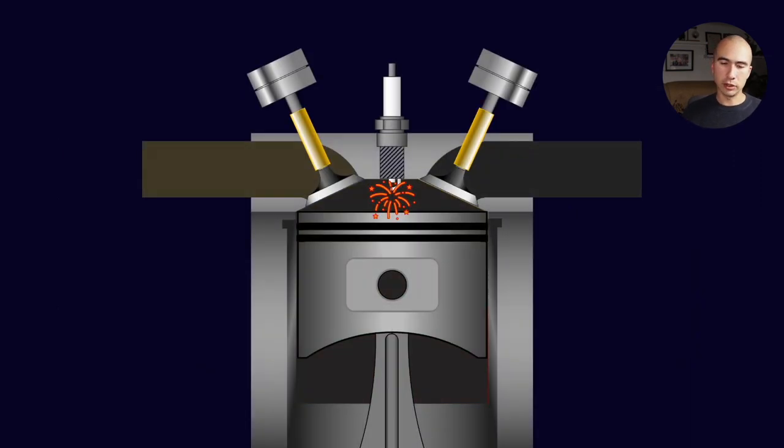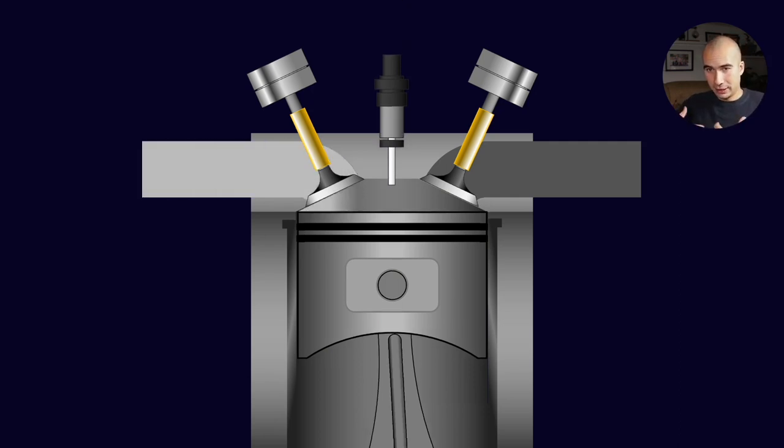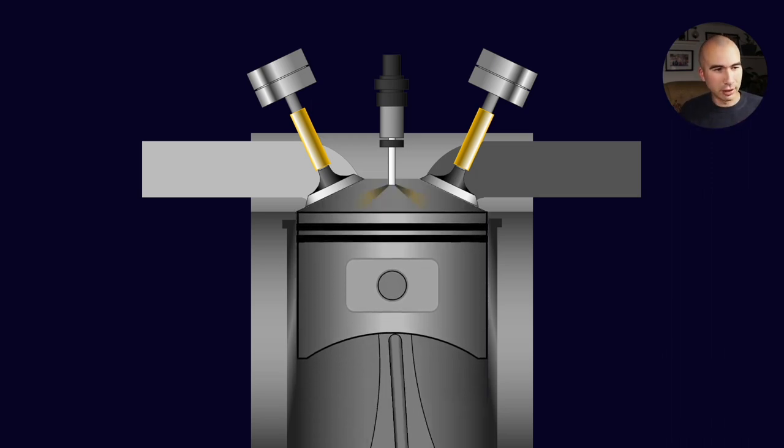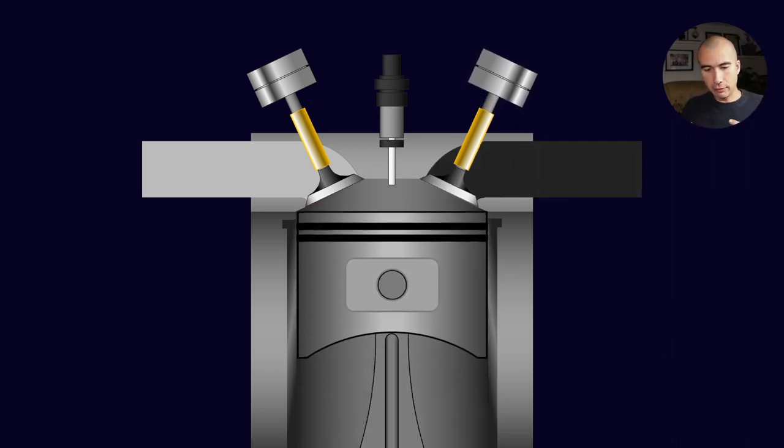Let's consider the differences between spark ignited and compression ignited engines. With spark ignited engines, the spark initiates ignition. In diesel engines, fuel is sprayed directly into the combustion chamber, and compression of the air-fuel mixture causes ignition.